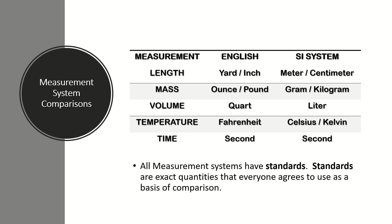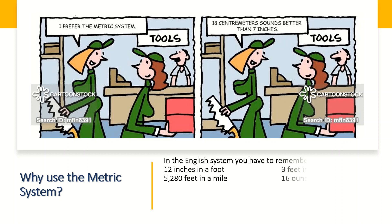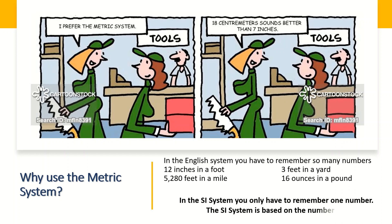All measurement systems have standards — exact quantities that everyone agrees to use as a basis of comparison. Why use the metric system? Besides being a standard system, in the SI system you only have to remember one number: 10. In the English system you must remember many different numbers, such as 12 inches per foot, 5,280 feet per mile, 3 feet per yard, and 16 ounces per pound.